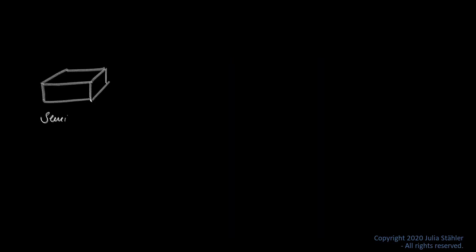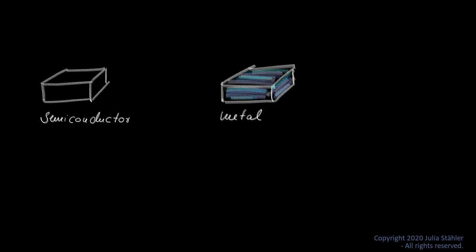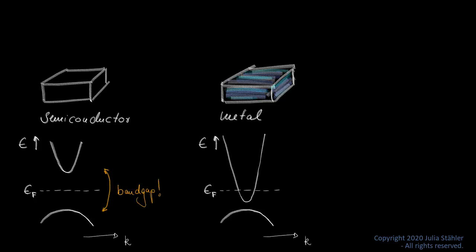First, let me remind you what the difference between a semiconductor and a metal is. A semiconductor conducts electricity only semi-well because it has a band gap around the Fermi energy. A metal conducts electricity quite well because the Fermi energy is crossing its conduction band.